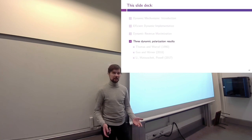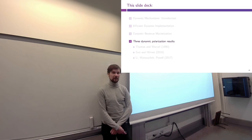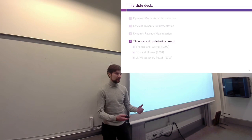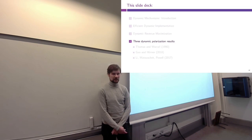Those were our main takeaways from the previous lecture on dynamic optimal mechanisms. Today I want to talk about three other papers on dynamic mechanism design that provide a counterbalance to that result, showing that asymptotic efficiency is not something we should take for granted.